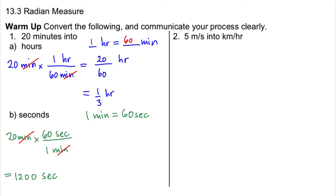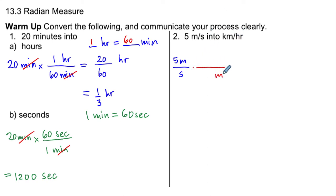I encourage you to pause the video and try the rest of these on your own, making sure you look at the process. This is really what I want to emphasize — a good process. In number 2, we are converting a speed of 5 meters per 1 second into kilometers per hour. So I'm going to convert meters into kilometers and seconds into hours. The conversion is 1 kilometer equals 1,000 meters.